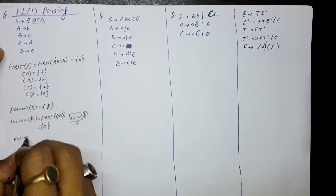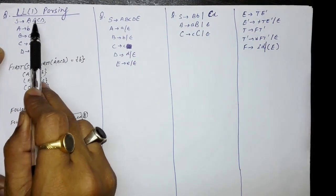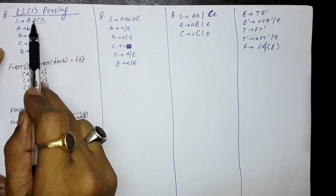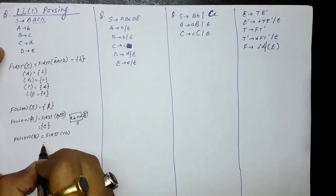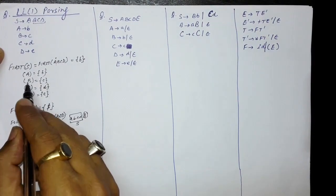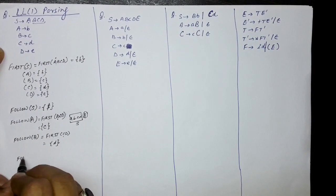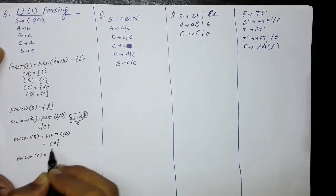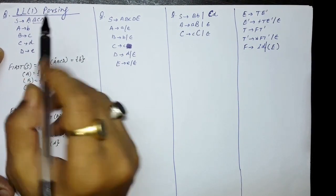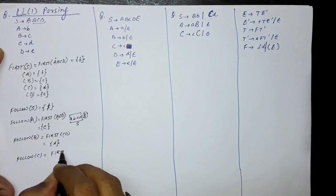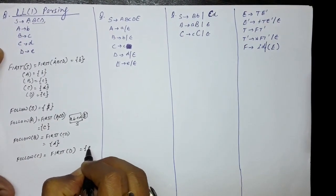Similarly, FOLLOW of B means finding where B appears on the right hand side. B appears in S produces ABCD, so FOLLOW of B means FIRST of CD. FIRST of CD means FIRST of C, and FIRST of C means small d. So FOLLOW of B is small d. FOLLOW of C: after C appears in ABCD, we have FIRST of D. FIRST of D is small e, so FOLLOW of C is small e.